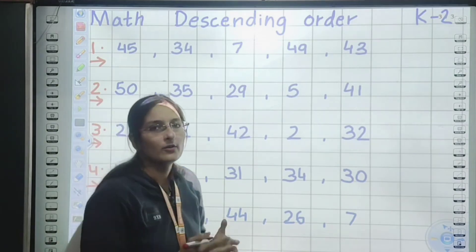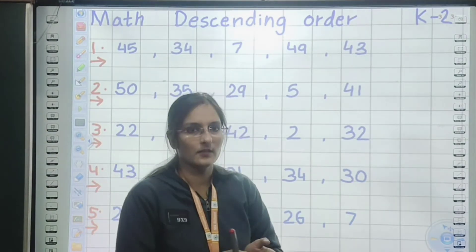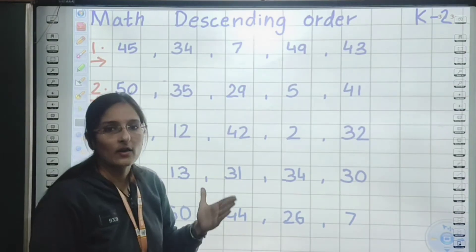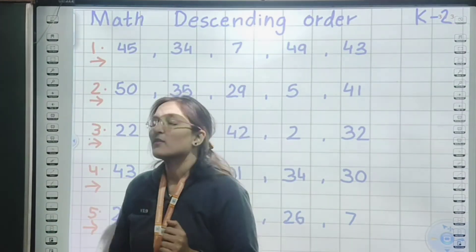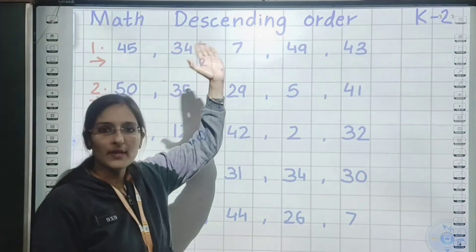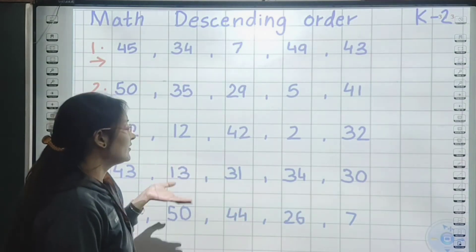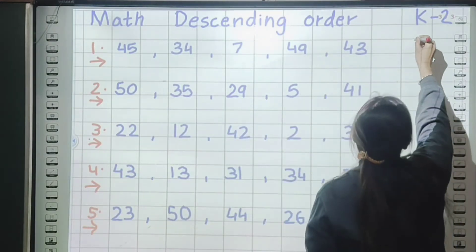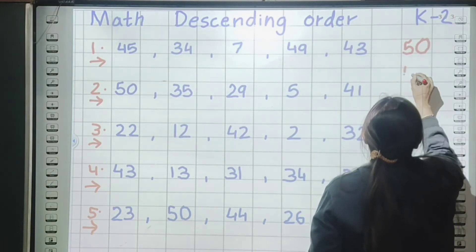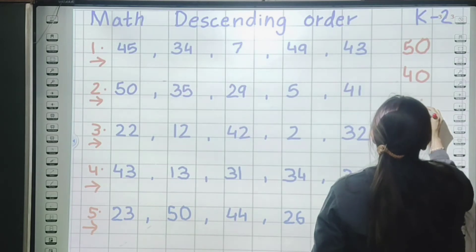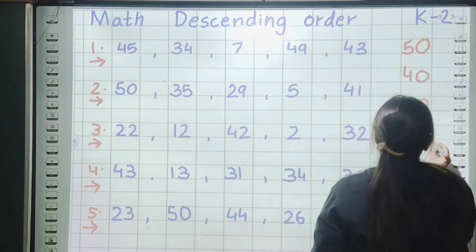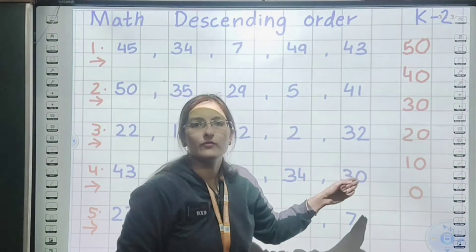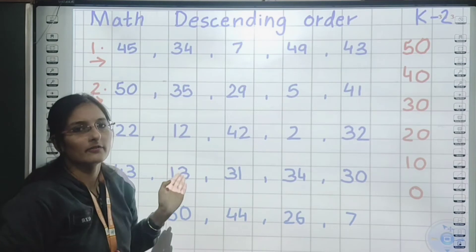In ascending order we start from smallest, but in descending order we start with the biggest. For that, we have to write the backward counting first. Because in that, numbers go from the biggest to the smallest. Here we are working with numbers up to 50. So the backward counting from 50 to 0 will be our reference: 50, 40, 30, 20, 10, and 0. Numbers will be included in their respective lines.